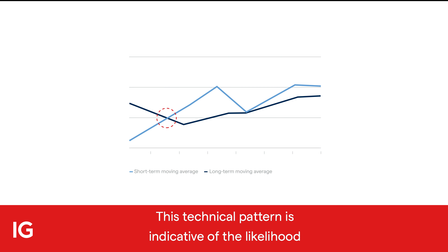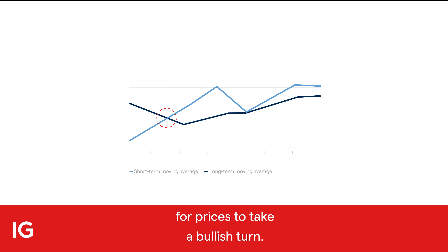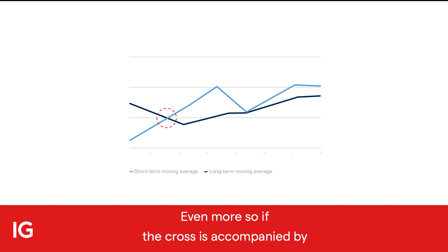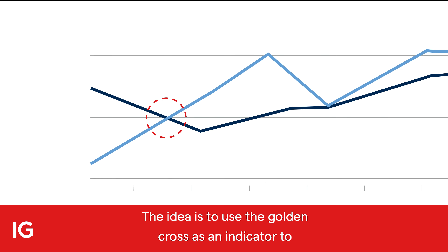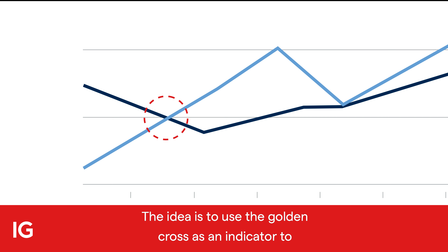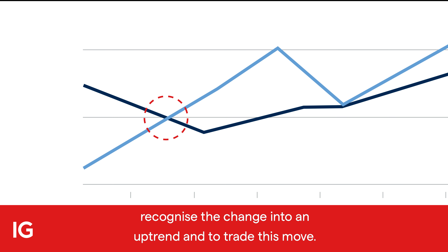This technical pattern is indicative of the likelihood for prices to take a bullish turn, even more so if the cross is accompanied by high trading volumes. The idea is to use the golden cross as an indicator to recognise the change into an uptrend and to trade this move.